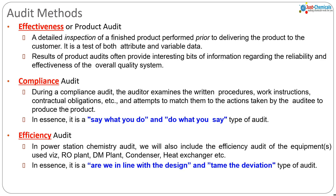When we talk about the subject here, within the power station chemistry department — as a supplier — the chemistry department has customers such as main operations, BTC operations, CHP, EHP, and sometimes even the environmental department. The products that can go through effectiveness or product audit include DM water and effluent in their processes.